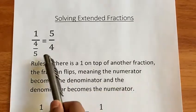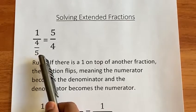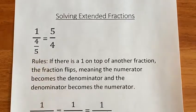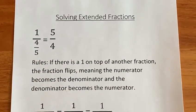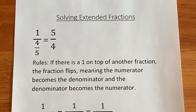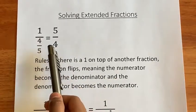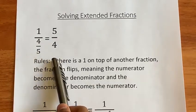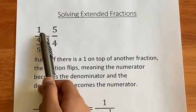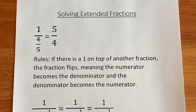So here the 4 over 5 flips, becoming 5 over 4. And this happens because what we are actually doing is multiplying 5 over 4 on both sides. So the 5s and the 4s cancel out, and the 5 over 4 has nothing to cancel out here, so it just becomes 5 over 4.